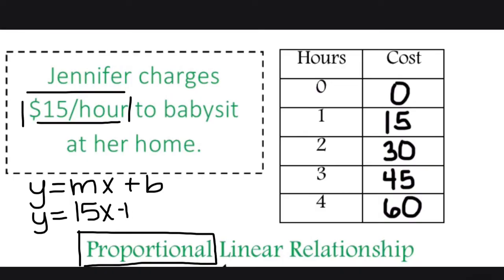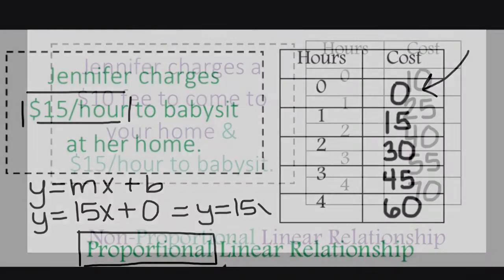However, the b or the y-intercept, remember, at zero hours, she charges zero dollars. So the starting point is zero. So it really looks like 15x plus zero, which can be rewritten as y equals 15x. That situation is proportional.